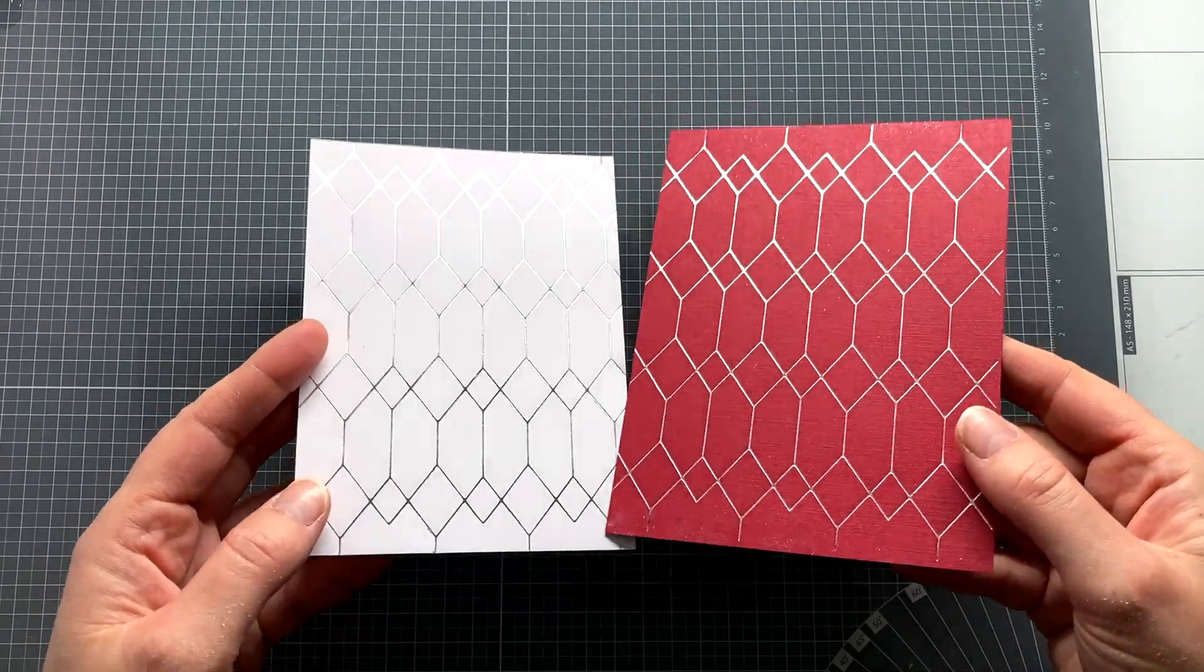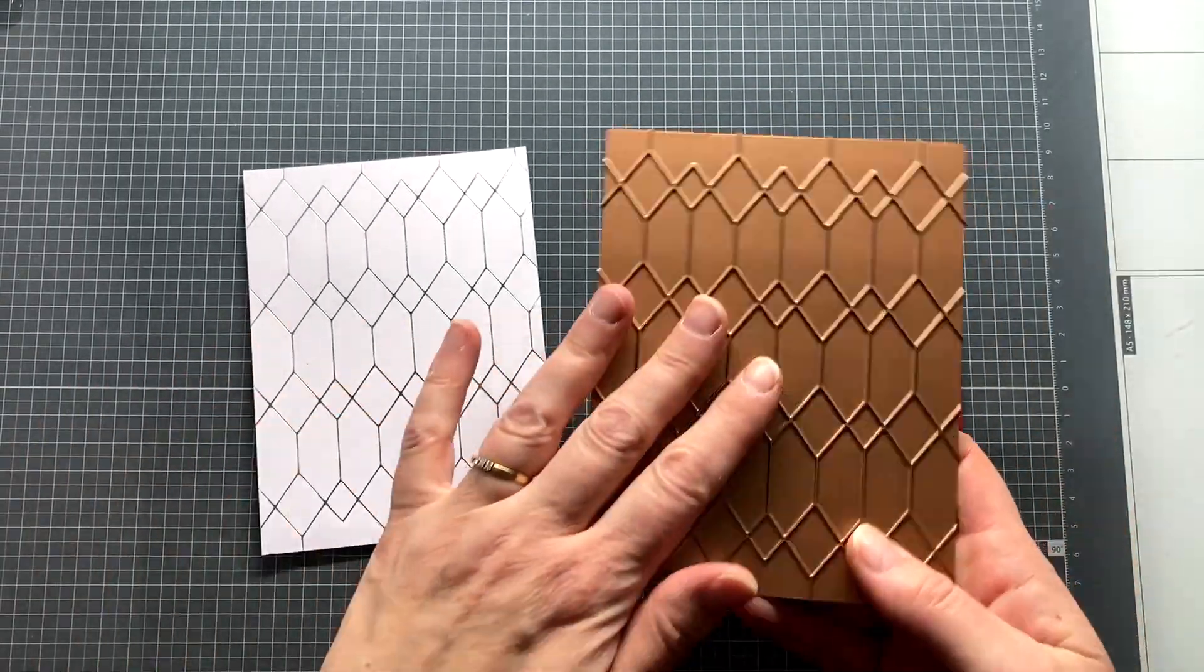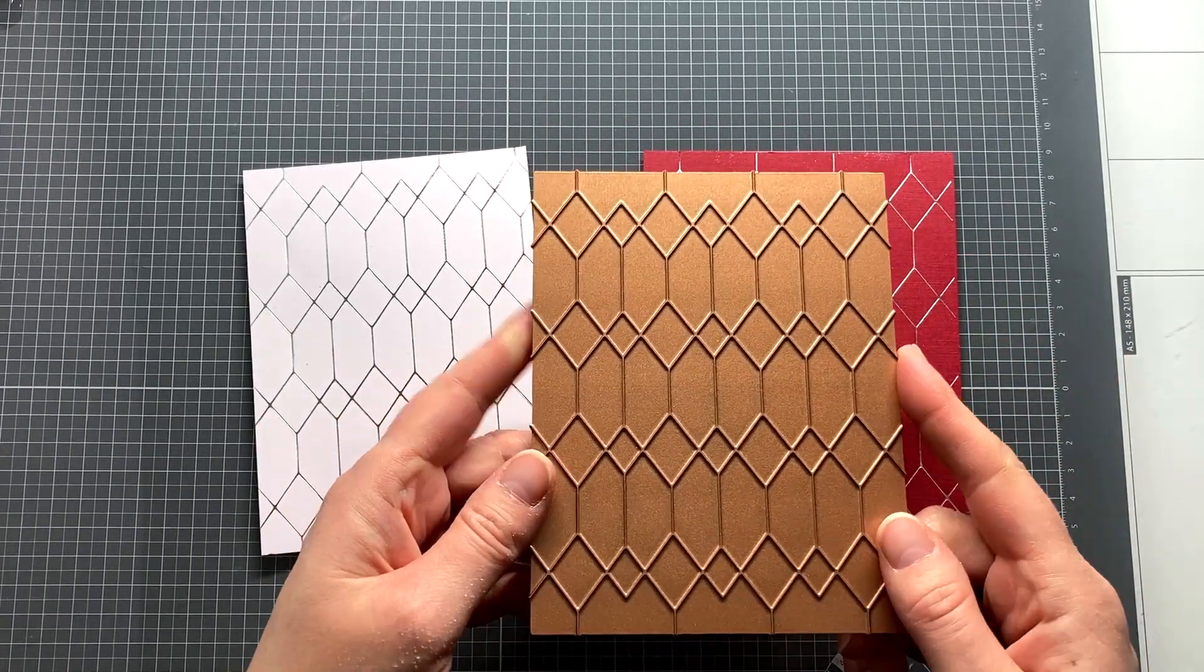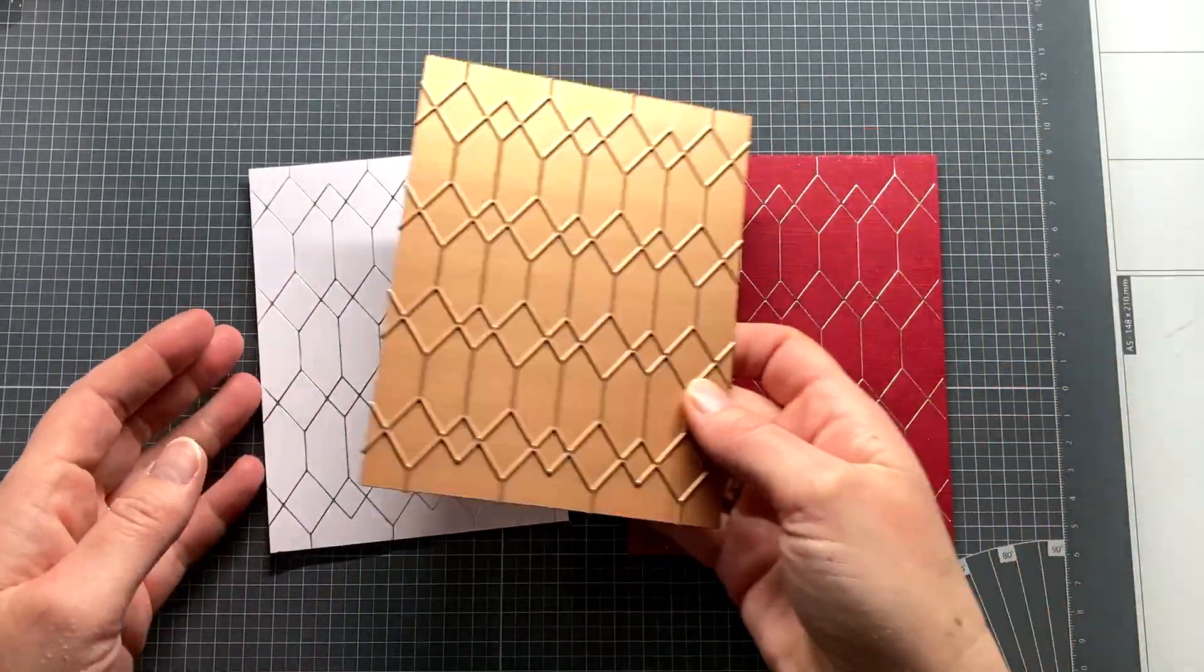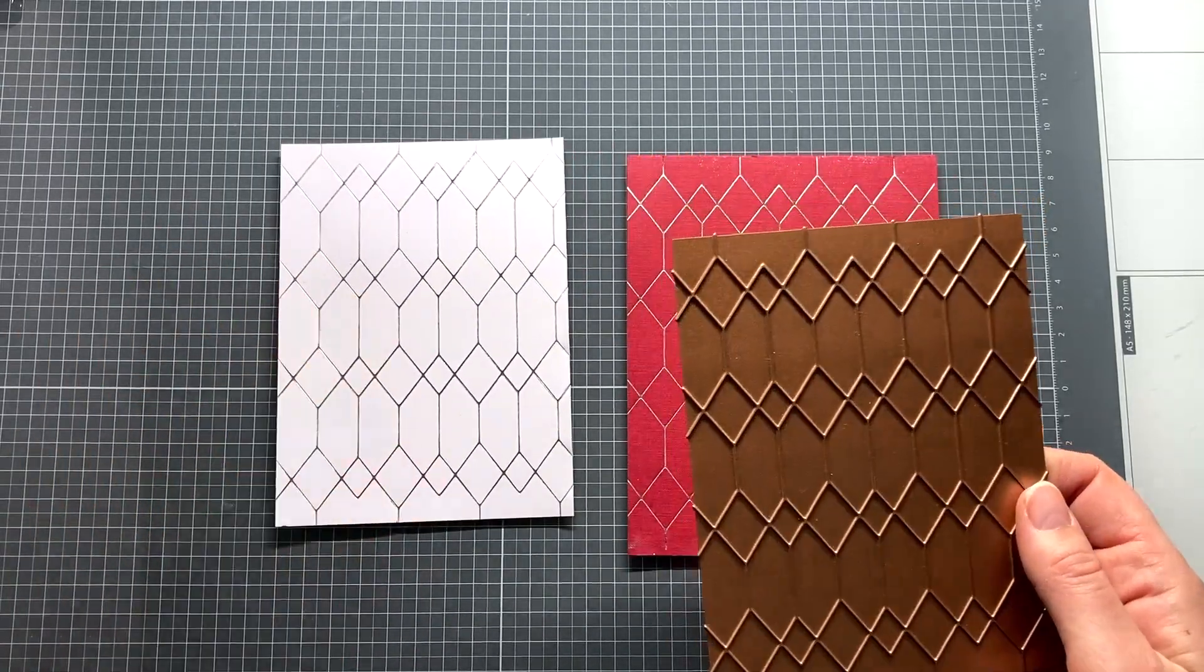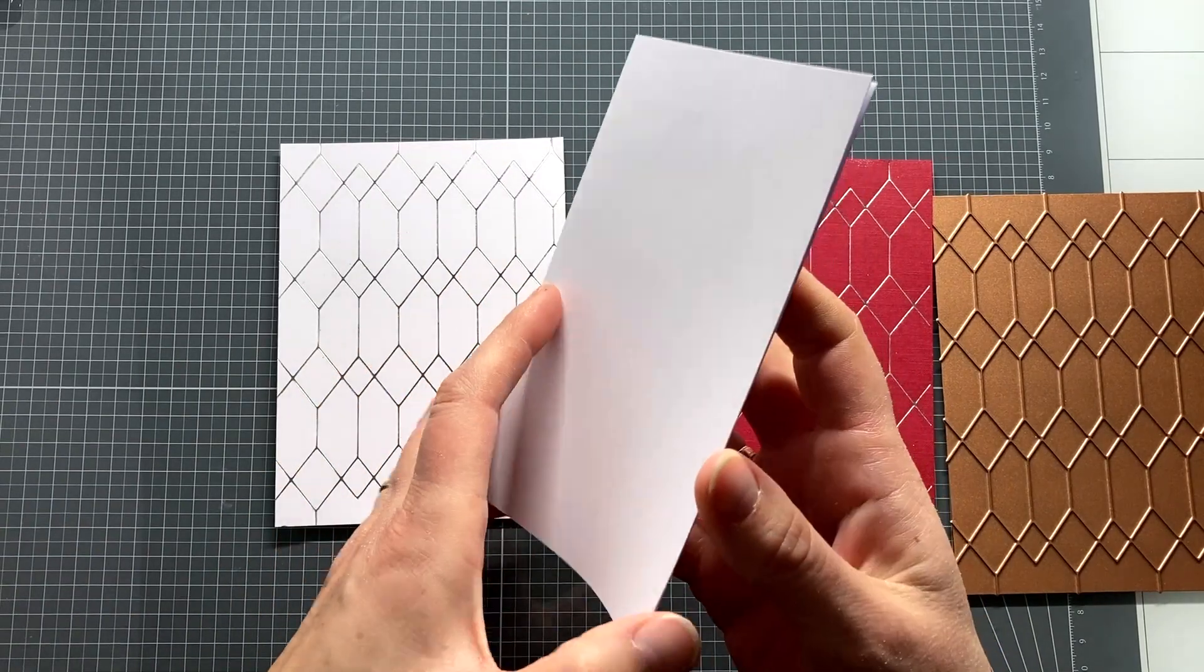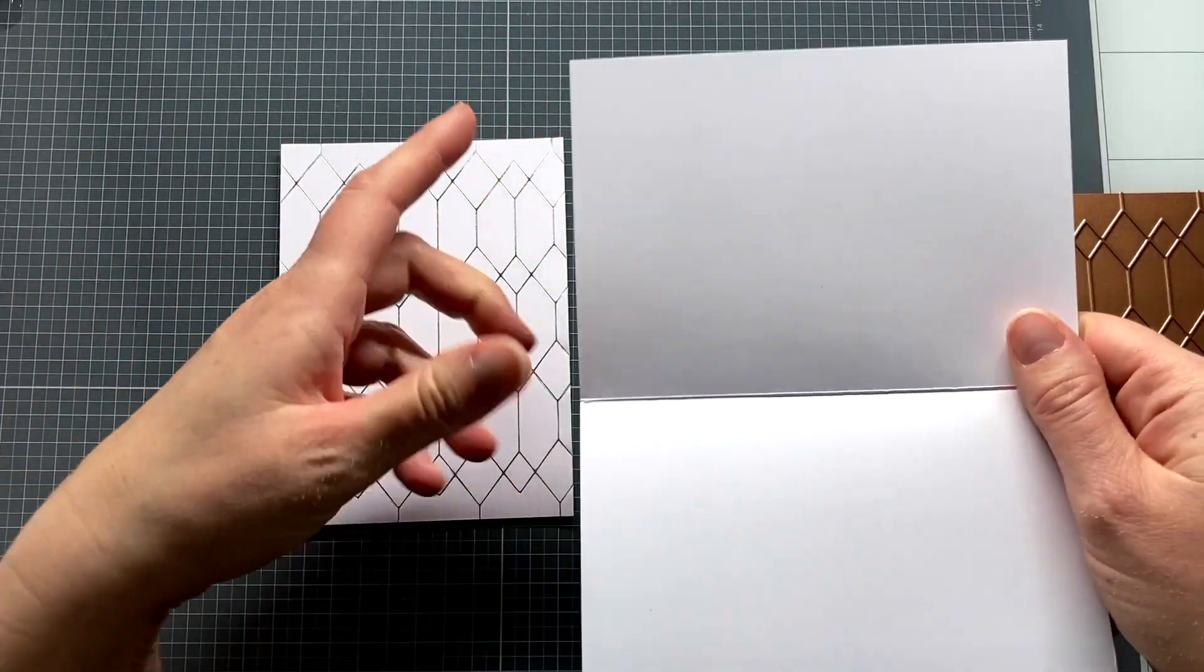I have already foiled two backgrounds with the Spellbinders Geometric Diamond Background Glimmer Plate. I foiled with silver foil on red linen cardstock and on white DCP paper. The plate is an American size of 4 and a quarter by 5 and a half inches in size. And I already trimmed it a little bit because I use other sizes for my cards in the Netherlands.